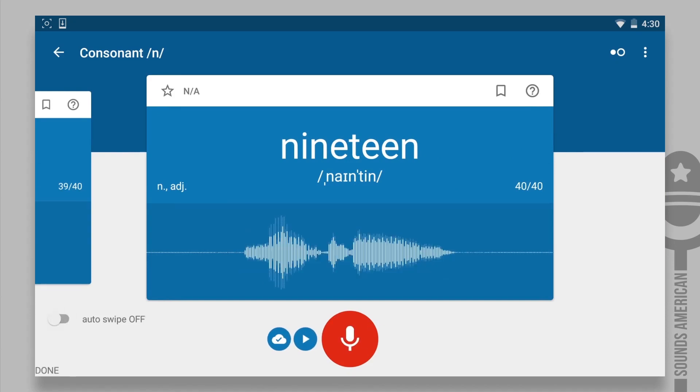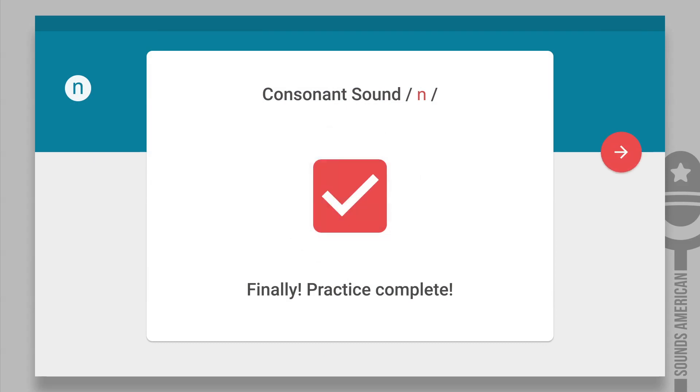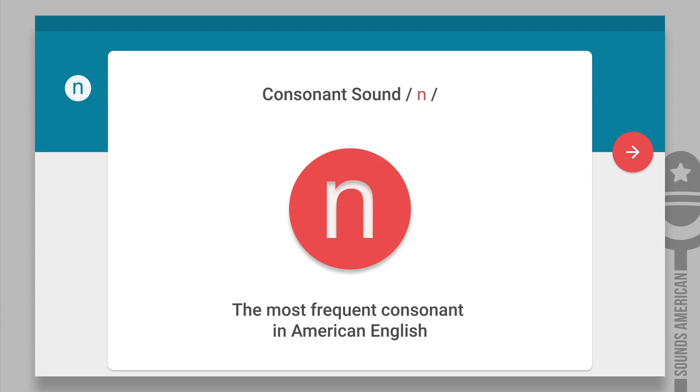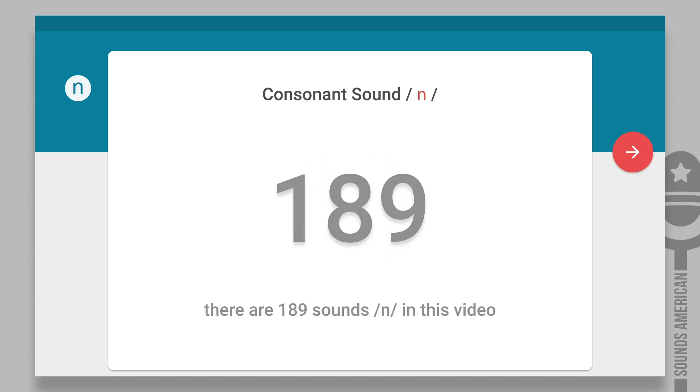You're done! Did you know that the n sound is the most frequently used consonant in American English? For instance, in this particular video, it's been used 189 times. Sorry, after that last sentence, it's now actually 192 times.